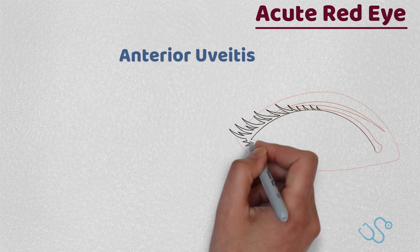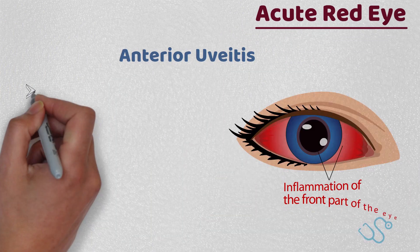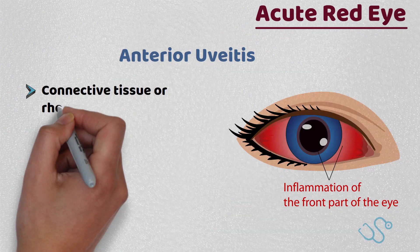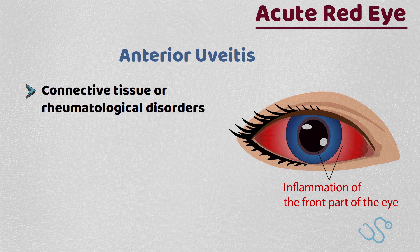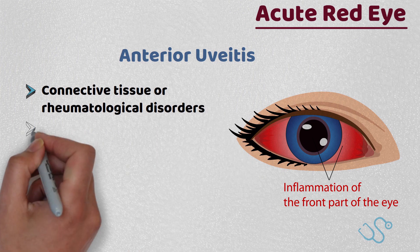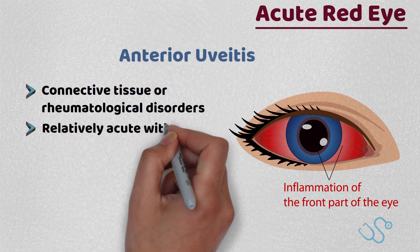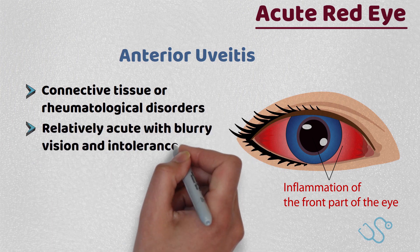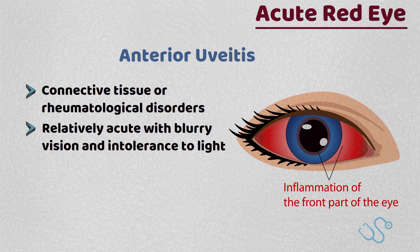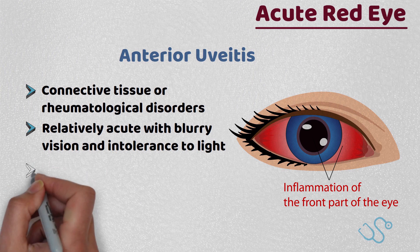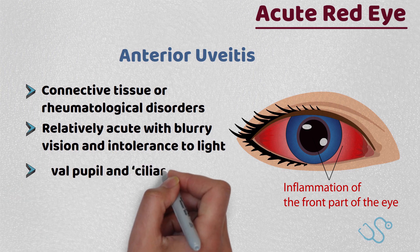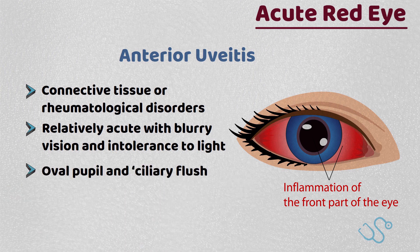Anterior uveitis — consider this in patients with connective tissue or rheumatological disorders, where the presentation is usually a relatively acute blurry vision and intolerance to light. Classically, the patients will have an oval pupil with ciliary flush.